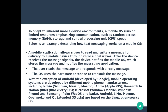An example of one mobile OS function is text messaging. A mobile application allows a user to read and write a message for delivery to a mobile device through radio signal waves. After the device receives the message, the device signals the mobile OS, which stores the message and notifies the messaging application.